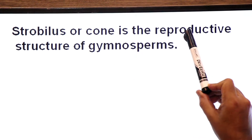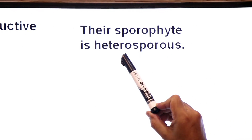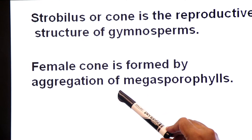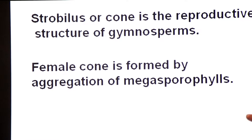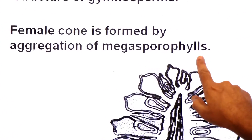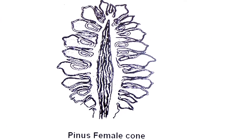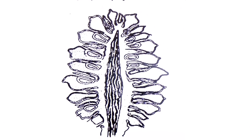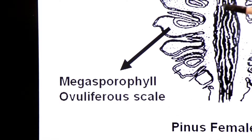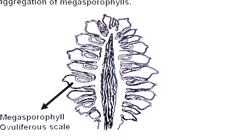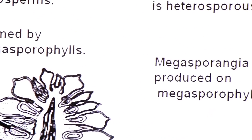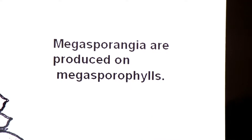In ke sporophyte mein jo reproductive organ hota hai usko strobilus kehte hain, also called cone — it is the reproductive structure of gymnosperms. Their sporophyte is heterosporous, producing two types of spores: microspores and megaspores. Female cone is aggregation of megasporophylls. Megasporophylls are modified leaves on which megasporangia are borne. This is the female cone of pinus — it is aggregation of megasporophylls, also called ovuliferous scale (ovule-producing scale). On the surface of megasporophyll, ovules are borne in naked position — that is why they produce naked seeds.